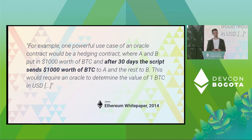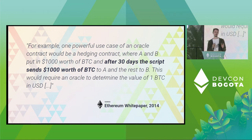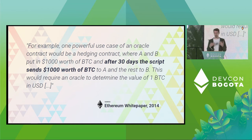I'll return to the quote from the original Ethereum white paper in 2014, but this time highlight a different part: after 30 days, the script sends $1,000 worth of Bitcoin to A and the rest to B. How does the script do this? How can the smart contract send those funds to A and B? Contracts do not have an ability to initiate their own execution.